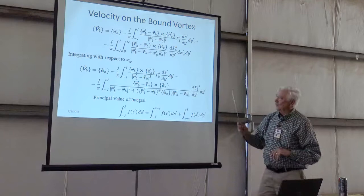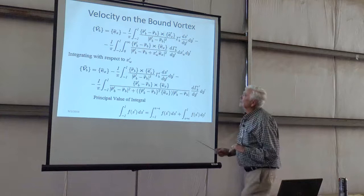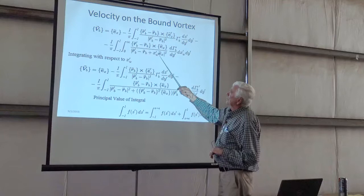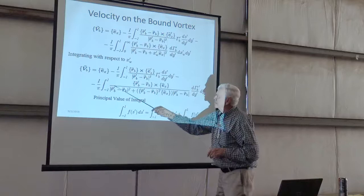And so that was the velocity at any point. What I really want is the velocity at on the bound vortex, because that goes into all the formulas. And so taking this, this little downstream coordinate, you can do that in a row. It's not that hard, you look it up in the book, and what you get is this.